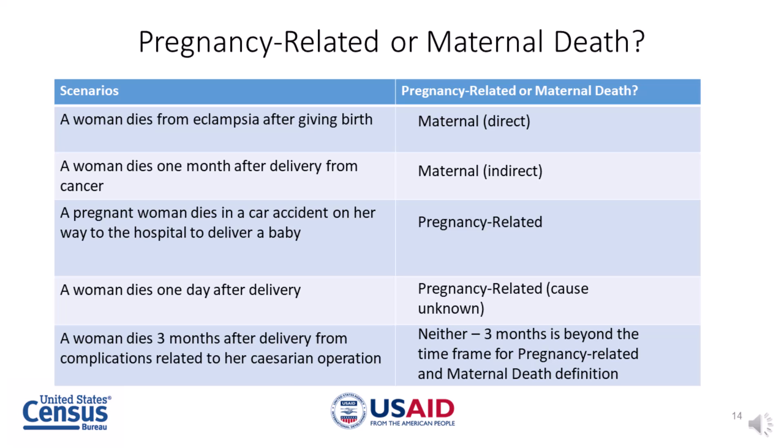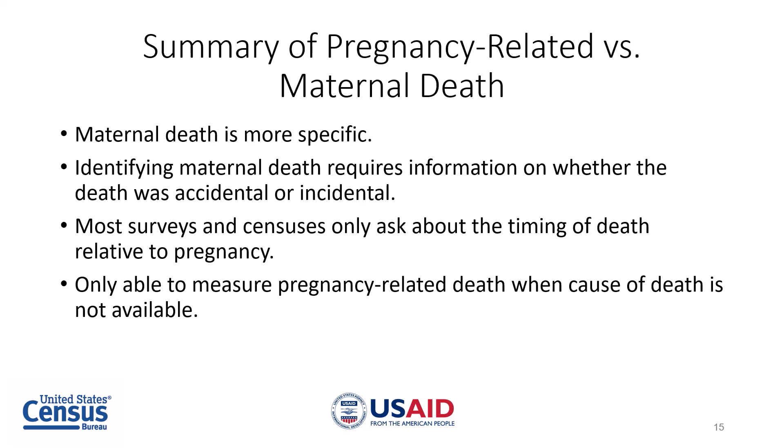This concludes the knowledge check. If you still have questions about whether a death is pregnancy-related or maternal, be sure to look back at the slides for the definitions. In this episode, we discussed the ICD-11 definitions of pregnancy-related and maternal death. In summary, maternal death is more specific — identifying it requires cause of death information to exclude accidental and incidental deaths. Most surveys and censuses only ask about the timing of death relative to pregnancy. When cause of death is not available, we can only measure pregnancy-related deaths. In the next episode, we will discuss the various indicators used to measure pregnancy-related and maternal mortality.